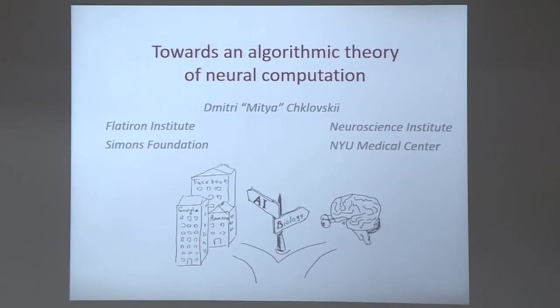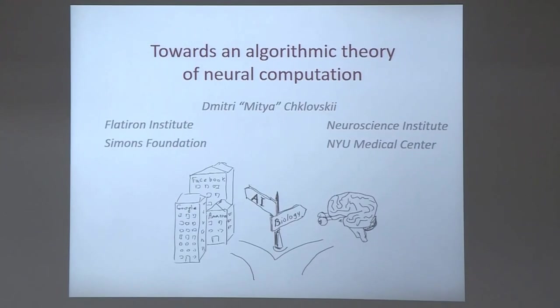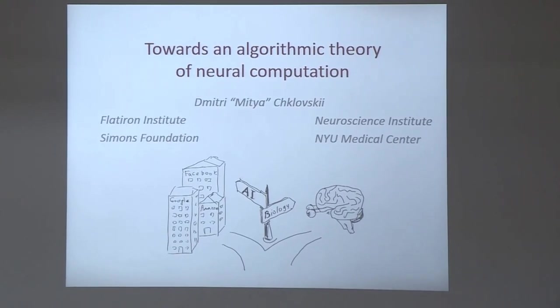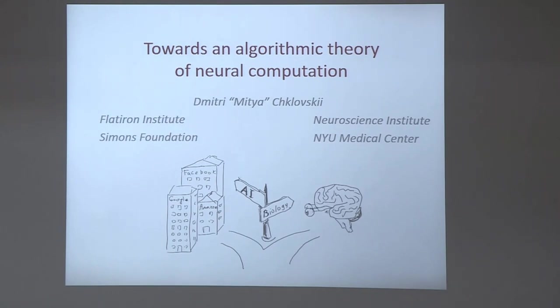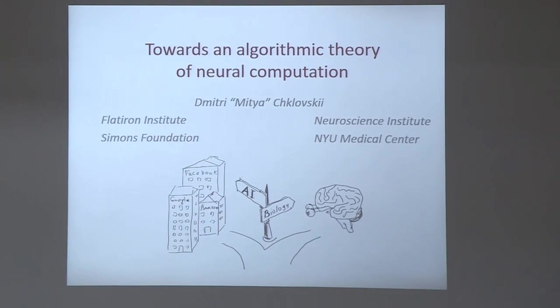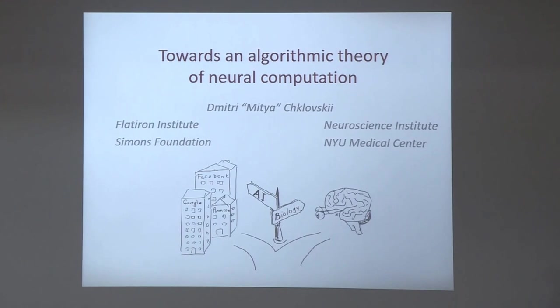This wide gap between artificial and natural neural networks raises important questions. What is the algorithm that underlies biological neural computation? And if we can answer this question, maybe biological insights can help us improve artificial neural networks to make them more powerful, more energy efficient, and more human-like.